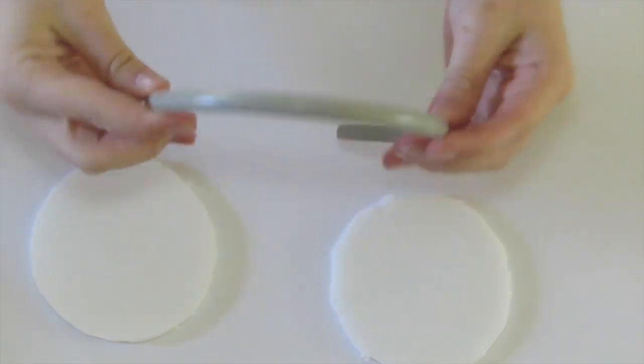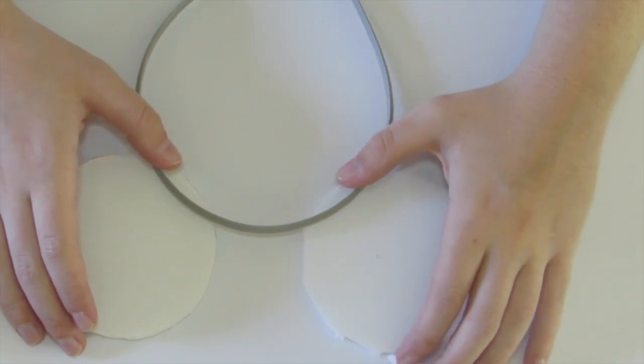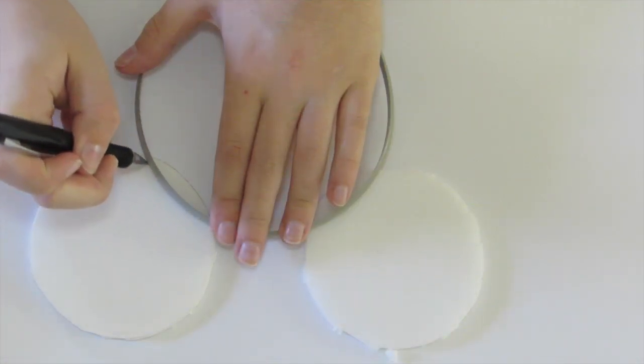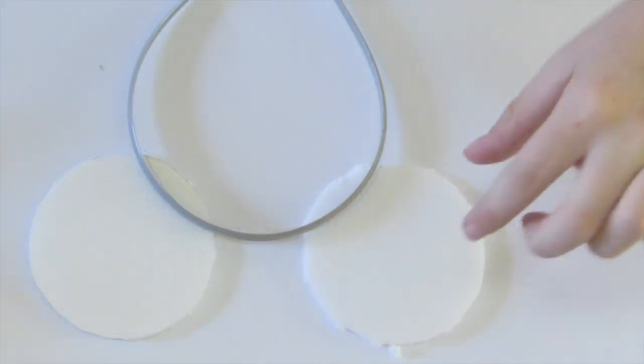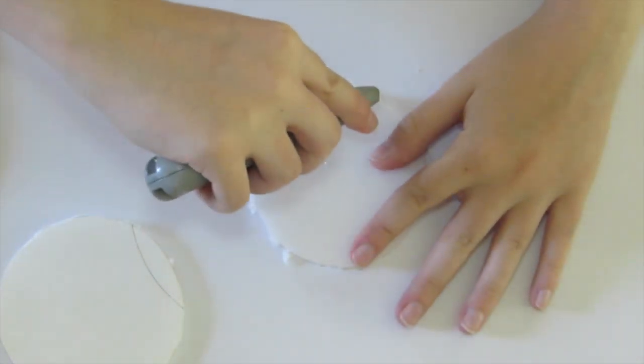Next, place the styrofoam circles so that they overlap with the headband wherever you would like your ears to lay. Trace out where they overlap with the headband, then cut out the sections so that the circles can lay flat on the headband.